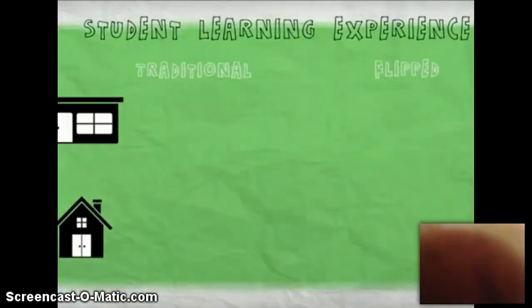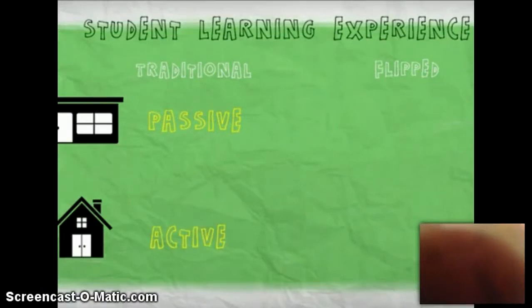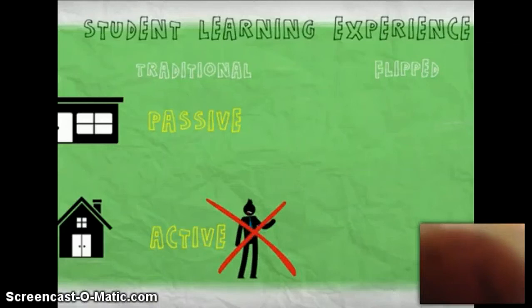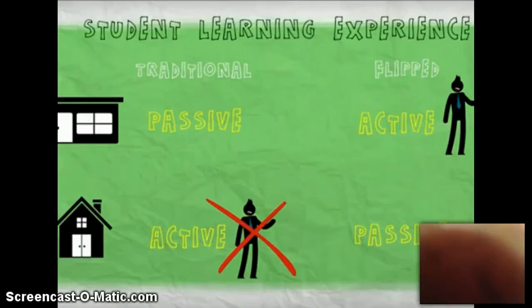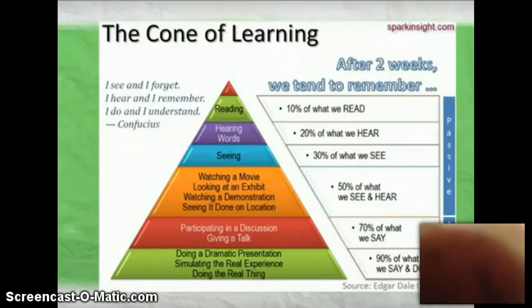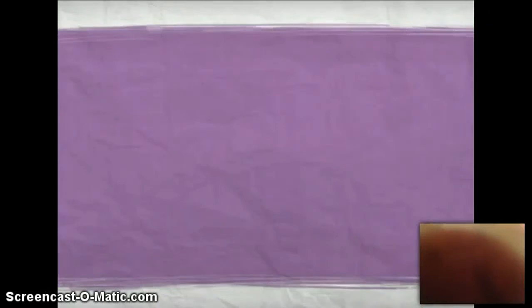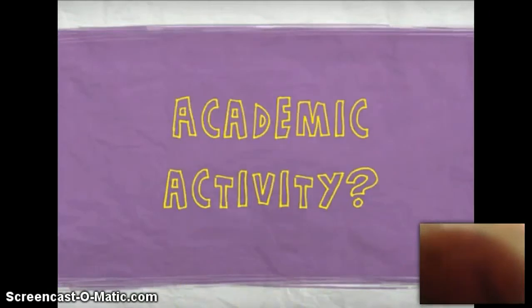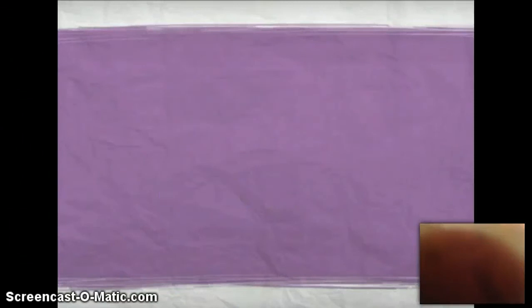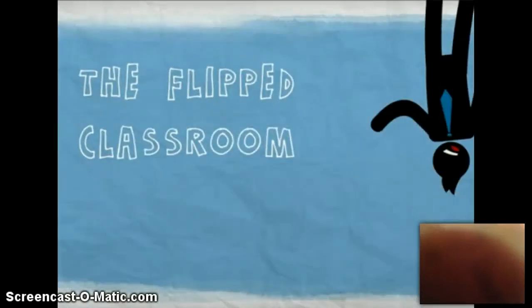The student's learning experience changes. In the traditional method, students passively learn at school but actively learn at home where there is no teacher support. In the flipped classroom, students learn actively at school with teacher support, and the passive learning is done at home where the teacher is less necessary. The difference between active and passive learning has been known for over 40 years, as seen in Edgar Dale's Cone of Learning. People retain 20% of what they hear but over 90% of what they actively do. The question is: do we want our classrooms to be places of academic activity or perennial passivity? The flipped classroom could be a classroom for the future.